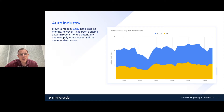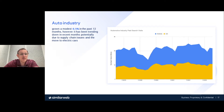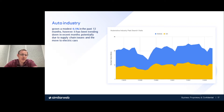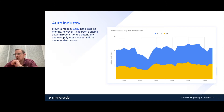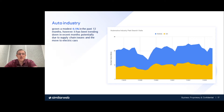The auto industry grew about 6.5% in the past 12 months, which is fairly slow. This may be attributed to supply chain issues we've been seeing, and also the shift toward electric cars becoming more widespread — people are wondering whether to wait for EVs to get cheaper or buy another combustion engine vehicle. Those uncertainties could be some of the reasons for that moderate growth.